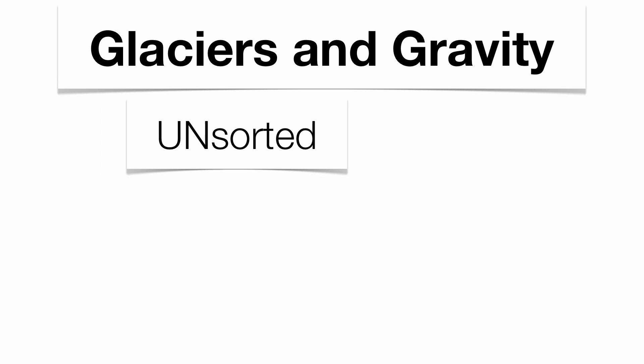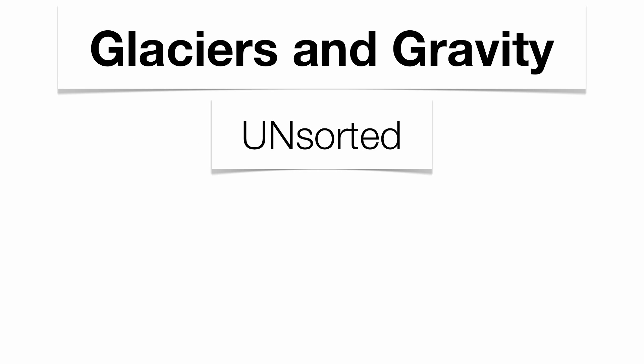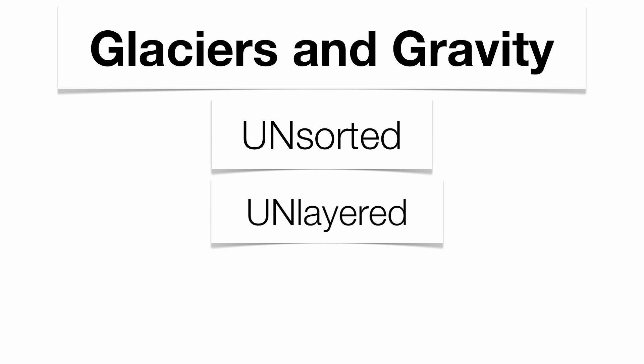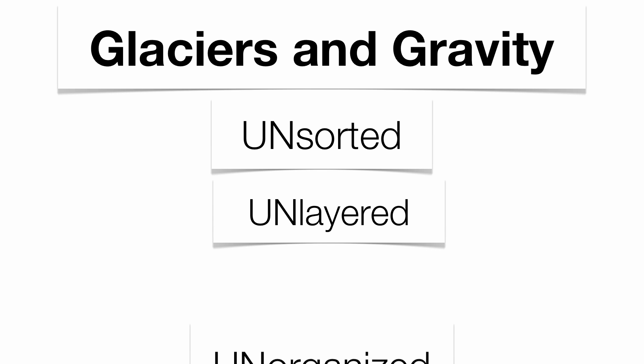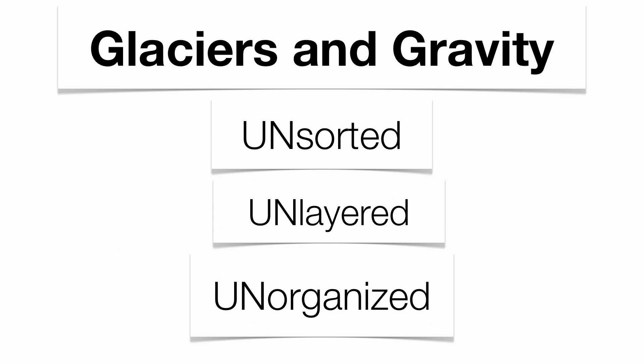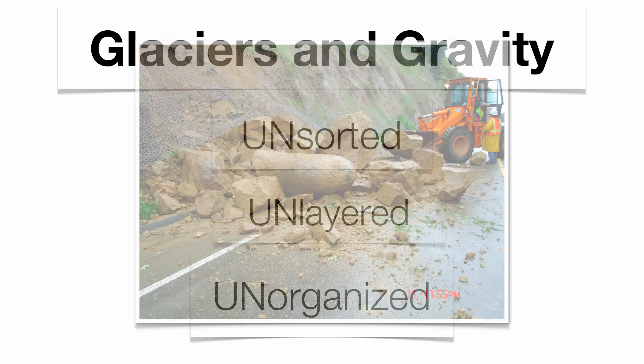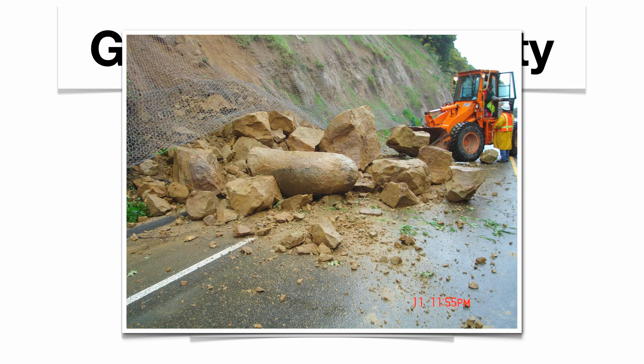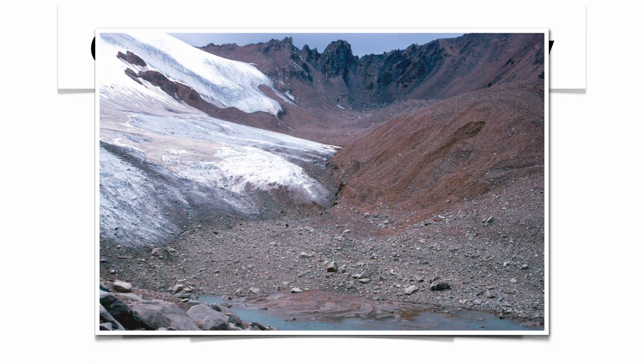Now glaciers and gravity are going to have relatively the same characteristics. They're going to give you unsorted sediment that's unlayered and unorganized, unless the glacier itself starts melting. So the two G's are going to give you unorganized sediments. You can see this with a landslide and also with a moraine — both show unorganized sediments.